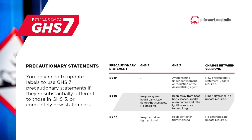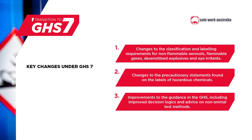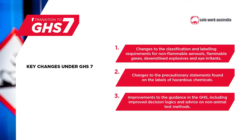The third change is improvements to the guidance in the GHS. This includes improved decision logics and expanded advice on non-animal test methods. It is worth referring to the new guidance in GHS7 if you are classifying hazardous chemicals, as many issues and common questions have been addressed. For the remainder of this webinar, I'll be discussing the changes to classification criteria in more detail — please use the timestamps below to jump directly to the chemicals that interest you.